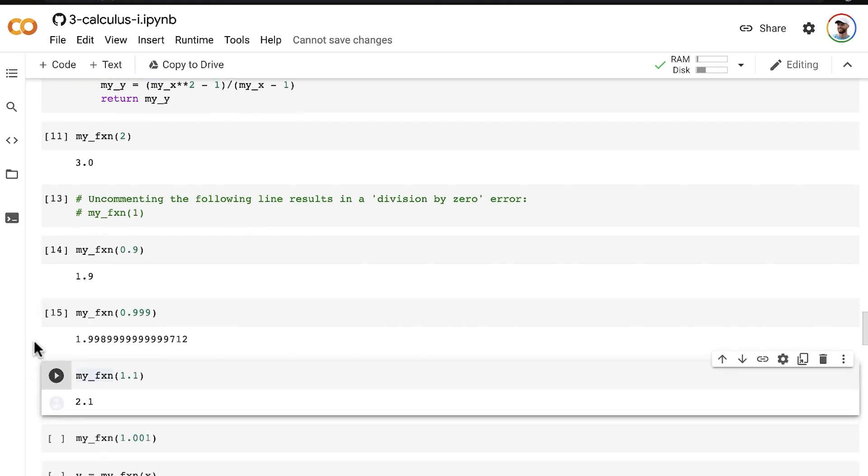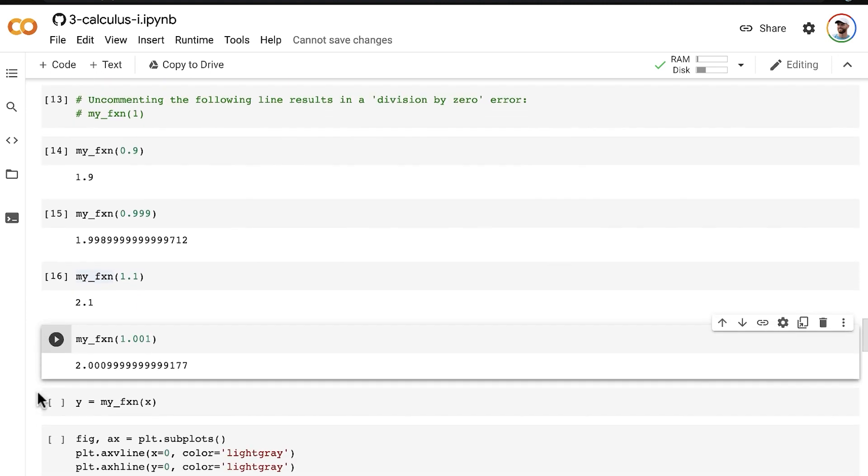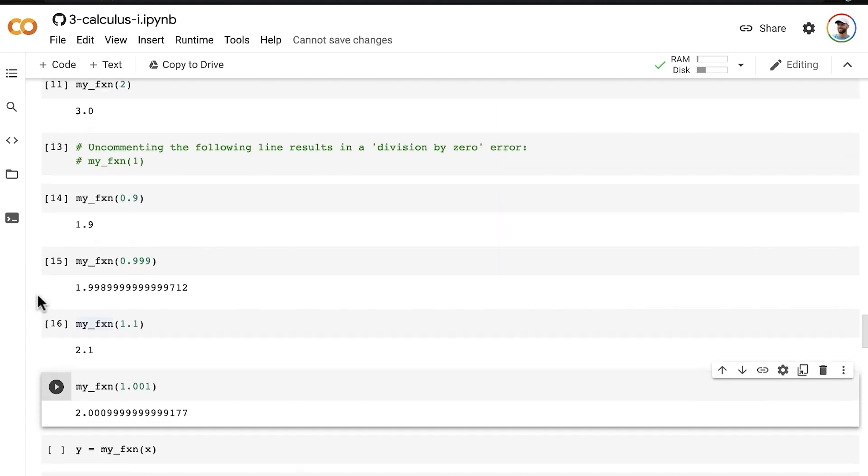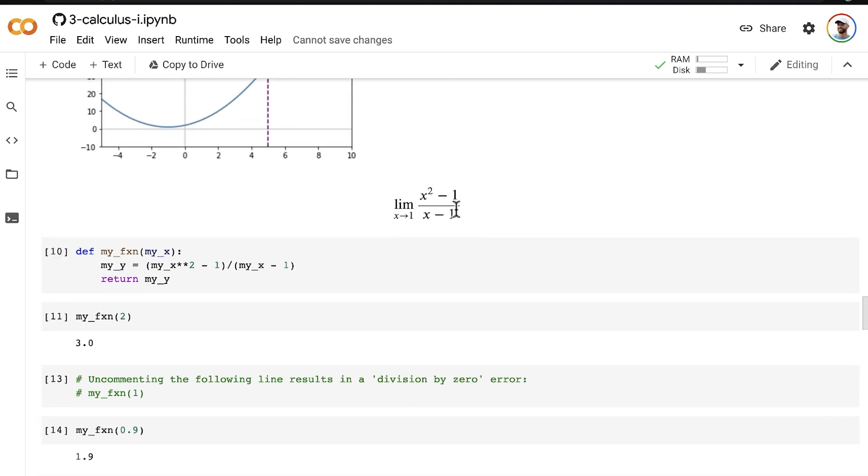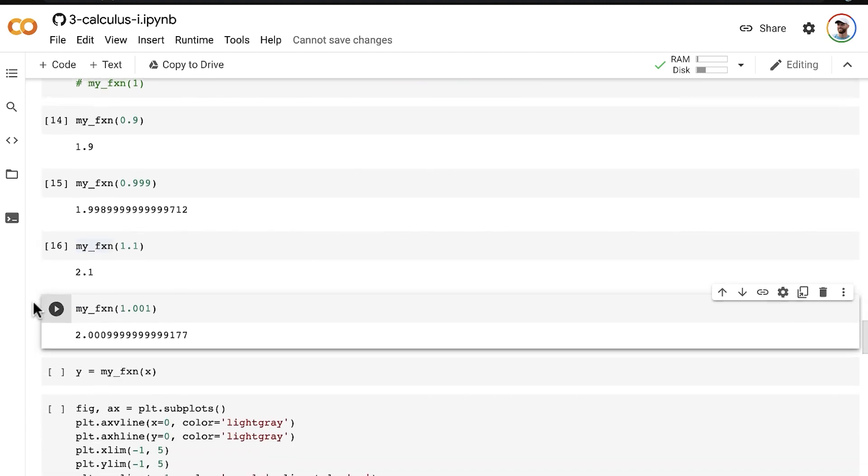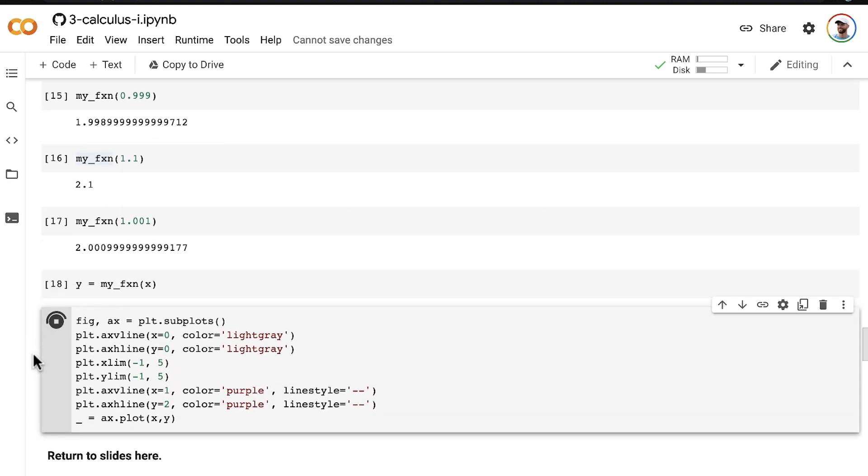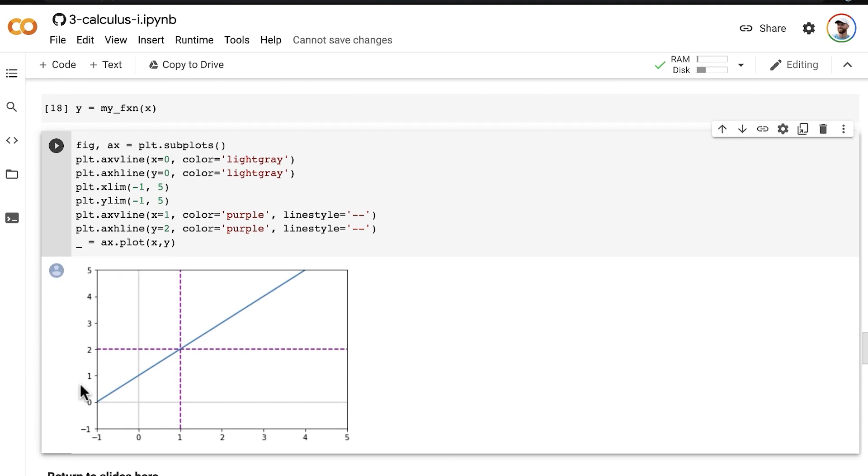The same thing happens from the right. As we get closer and closer to 1 from the right-hand side - 1.1, 1.001, 1.00001, whatever - the closer you get to 1, the closer your y value gets to 2. So it's clear empirically that the answer to this is 2. We can plot that out and see it. We've now shown also in code how if you get infinitely close to 1, the limit comes out to 2.